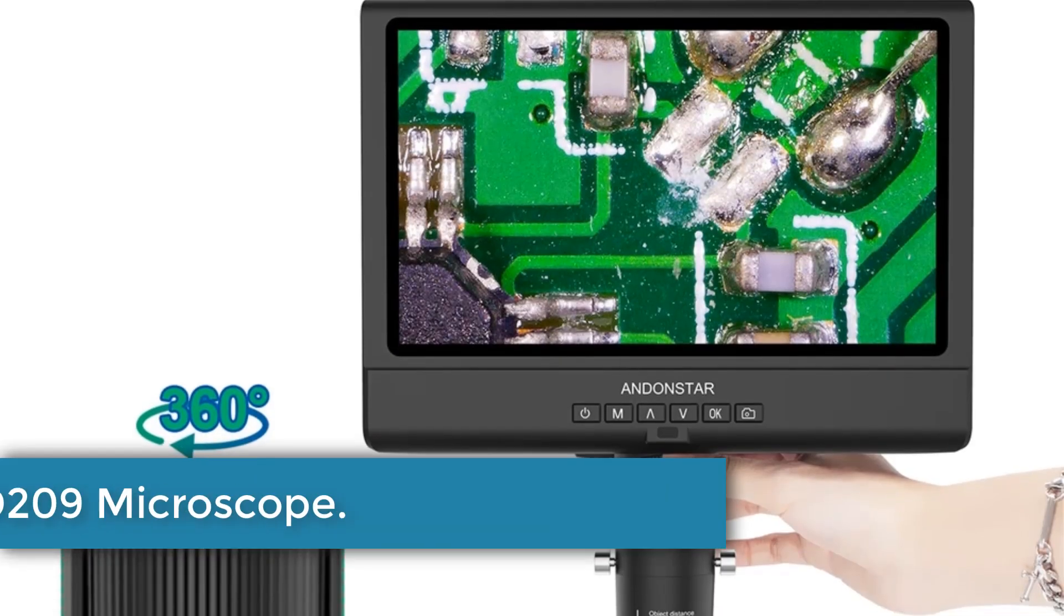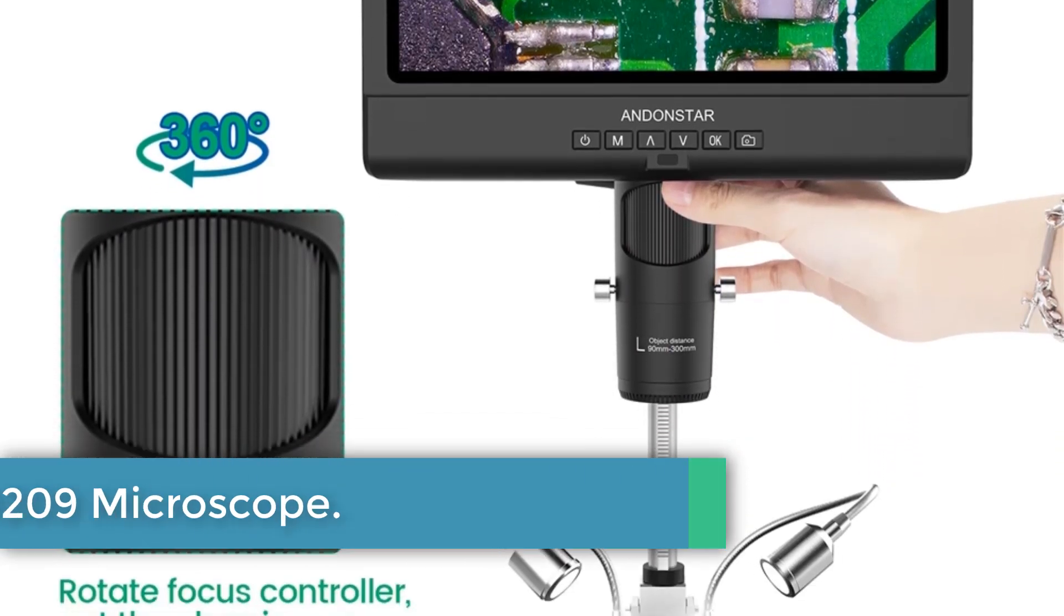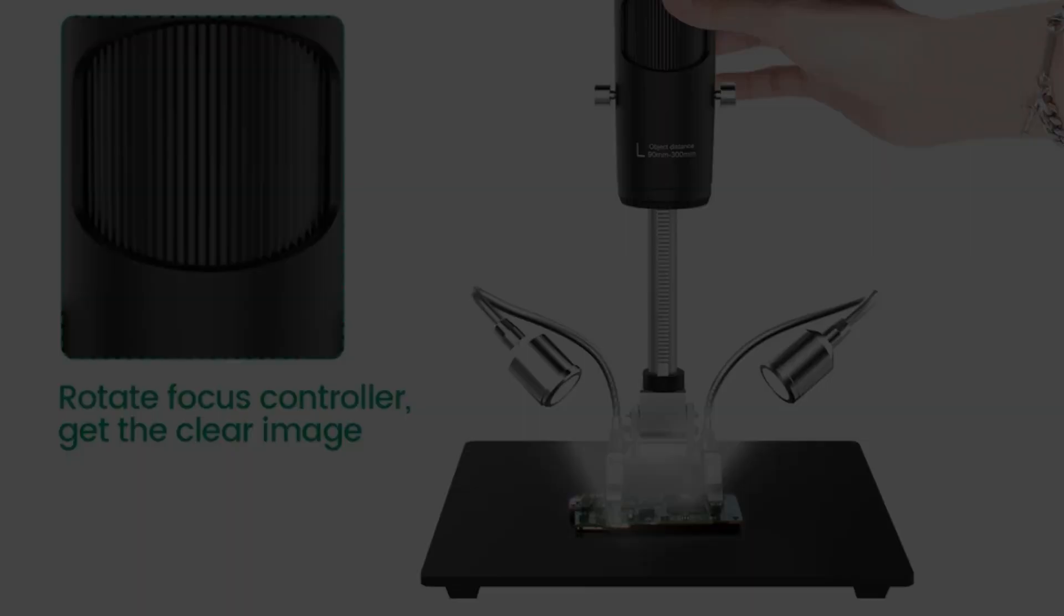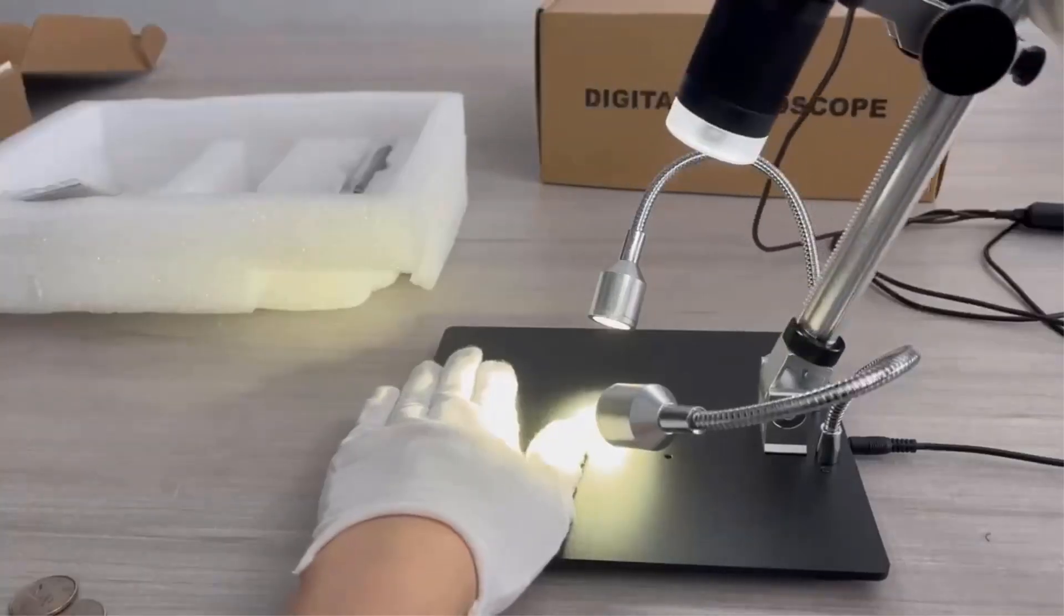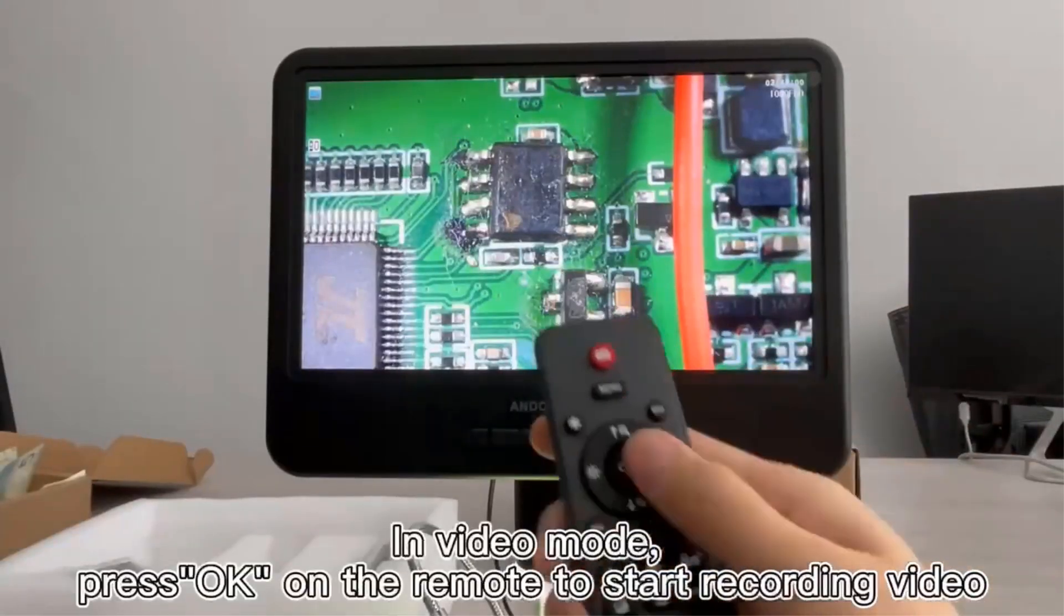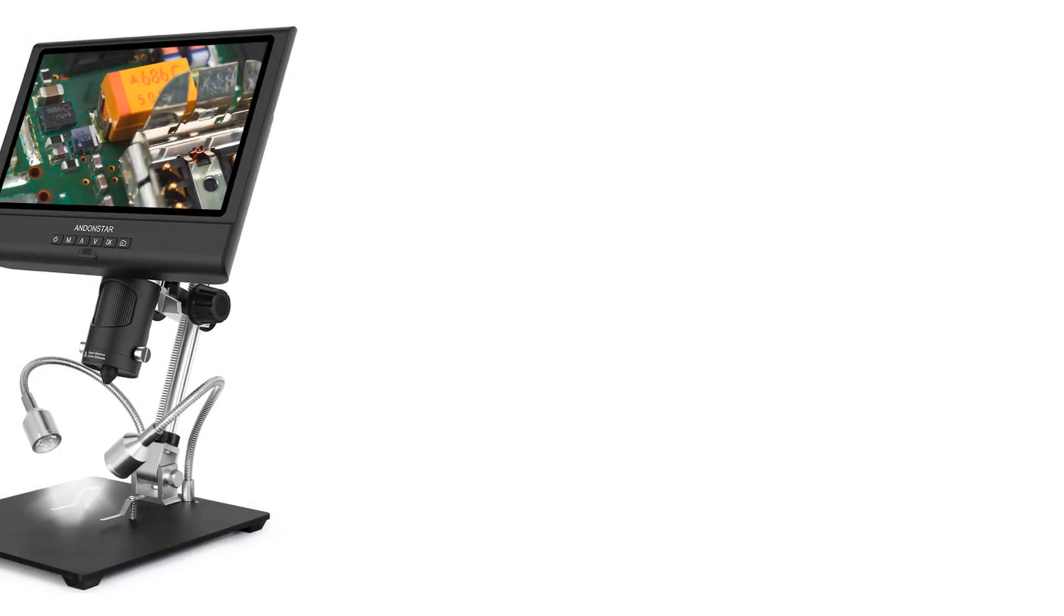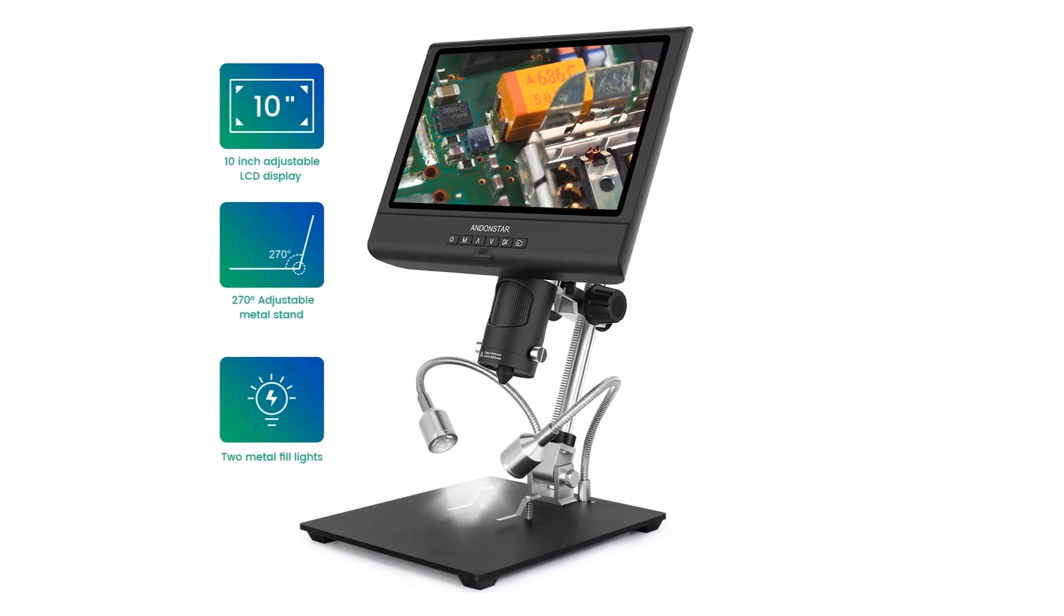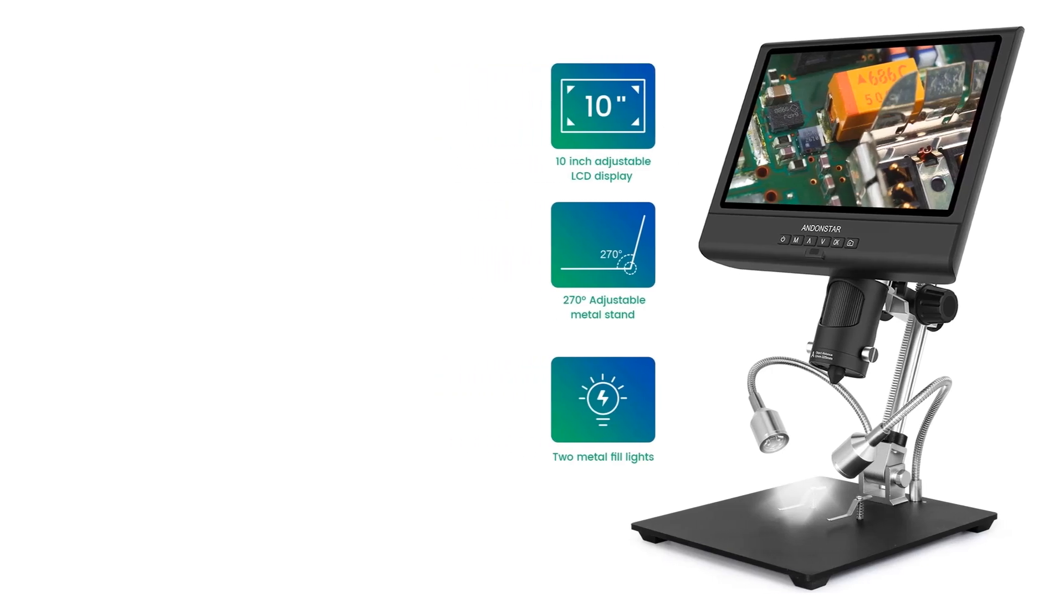Number 2: Andenstar AD209 Microscope. The Andenstar AD209 is a high-definition digital video microscope, featuring a 10.1-inch LCD display and a magnification range of up to 200x, making it ideal for tasks such as soldering, phone and watch repairs, and electronic inspections. Equipped with a 2-megapixel HD image sensor, it supports video resolutions of up to 1080p at 30 frames per second and photographic resolutions of up to 12M, 4032x3024, in JPG format.